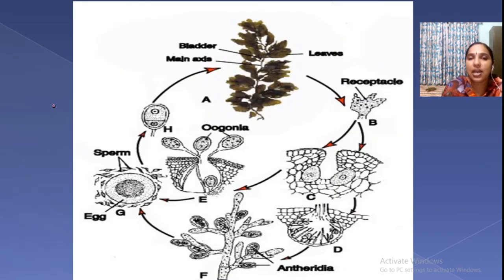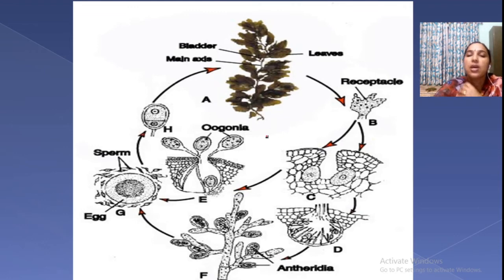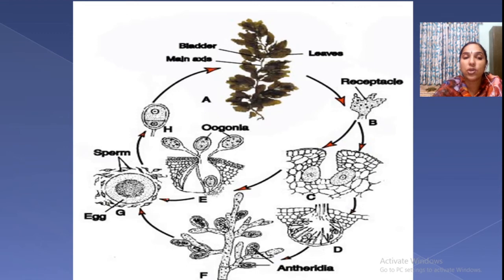This is Sargassum and its life cycle. The Sargassum plant branch bears receptacles. There are two types of receptacles: male receptacles bear antheridia and female receptacles bear oogonia. Antheridia release androzoids and oogonia produce eggs. Fusion takes place, and the zygote germinates and develops into a new Sargassum plant — that is the life cycle.